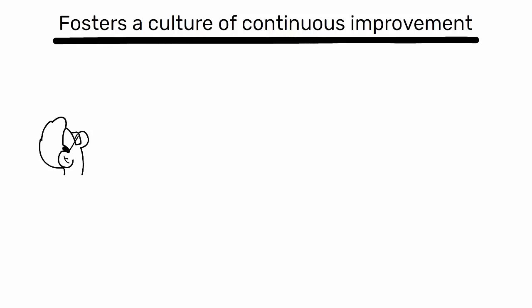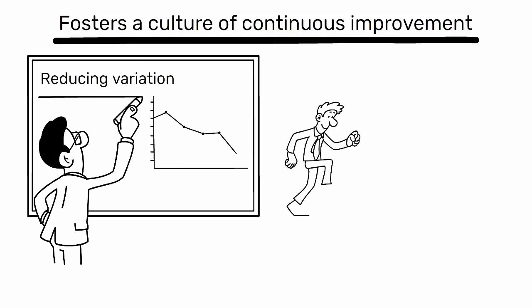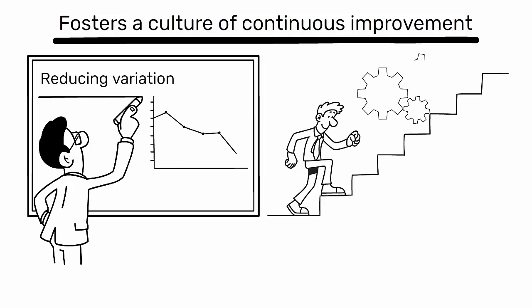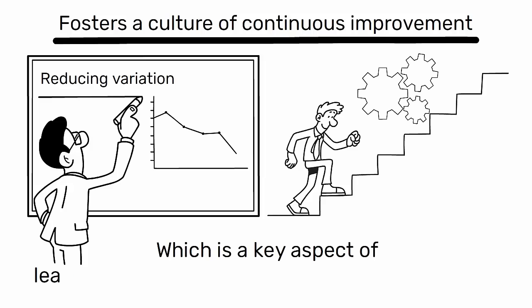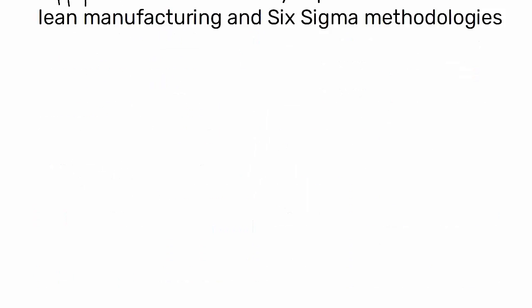Fourthly, it fosters a culture of continuous improvement. By focusing on reducing variation, you encourage a mindset of constantly looking for ways to improve processes, which is a key aspect of lean manufacturing and Six Sigma methodologies.